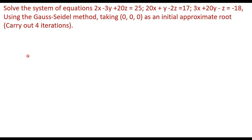Given a system of equations, to apply the Gauss-Seidel method, the coefficient matrix should be diagonally dominant. What we mean by a diagonally dominant matrix is as follows.